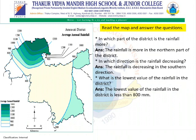Such data is known as point-related data. In the given figure, we can see the Amravati district annual rainfall. Let us do the map reading. In which part of the district is the rainfall more? Based on the index and the values given on the map, we can answer this question. The rainfall is more in the northern part of the district. In which direction is the rainfall decreasing? The rainfall is decreasing in the southern direction.